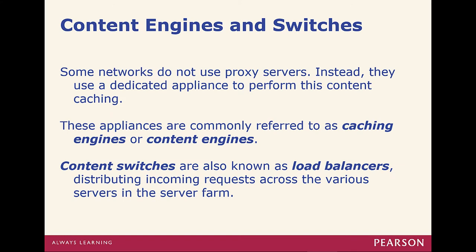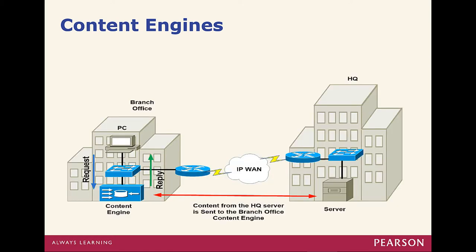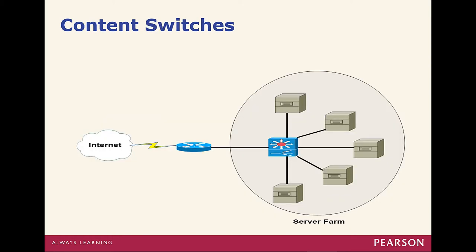Content engines and switches allow us to basically help filter. Content switches are also known as a load balancer. This allows us to better keep certain addresses and information current. For example, if we keep going to Google, this content engine will actually keep Google.com cached, making it a little easier to respond. Content engines are sometimes also used for filtering, but there is also a dedicated device called a content filter, which will filter traffic based on certain criteria — for example, a school may ban pornography, and the content filter will filter it out.